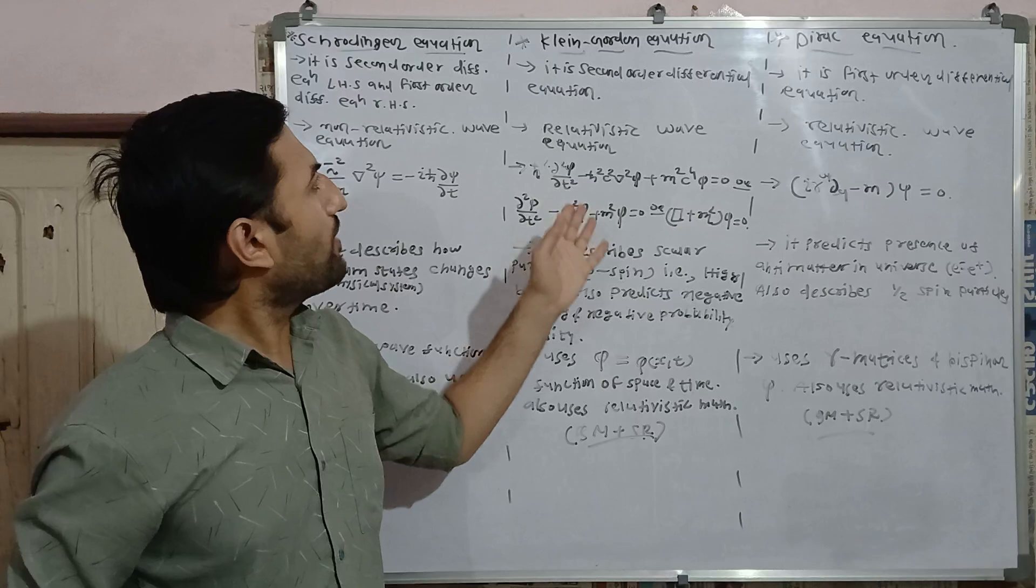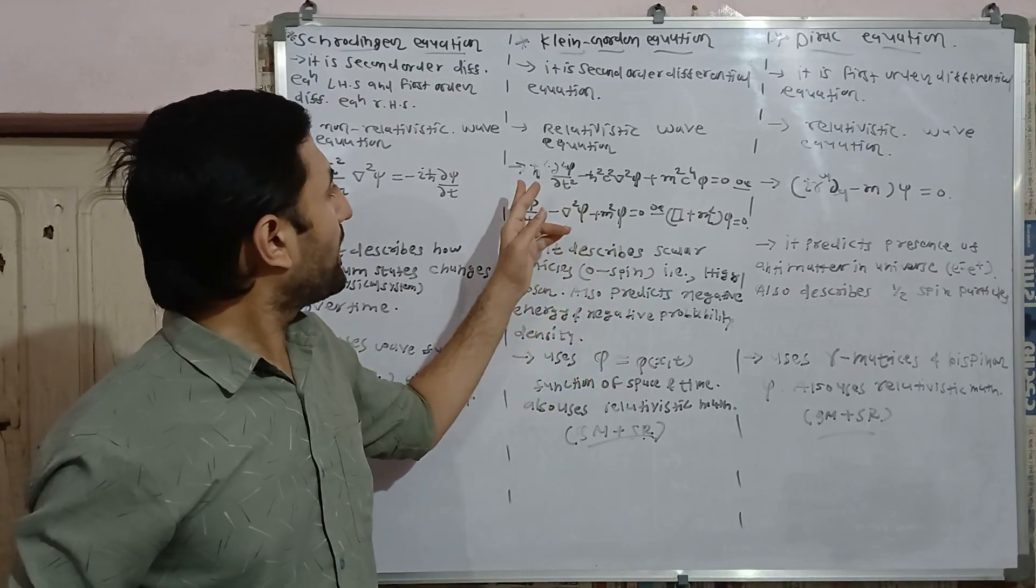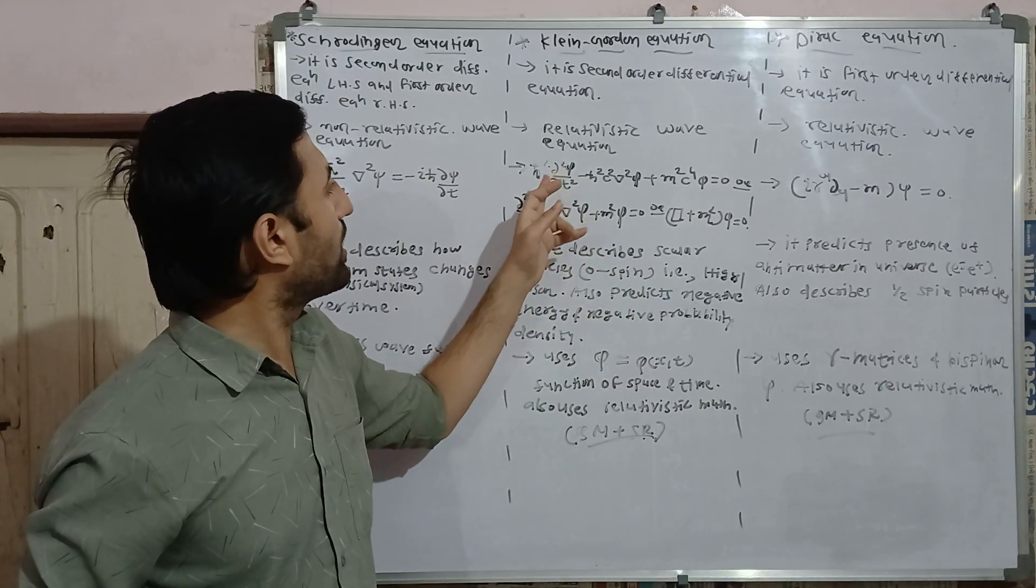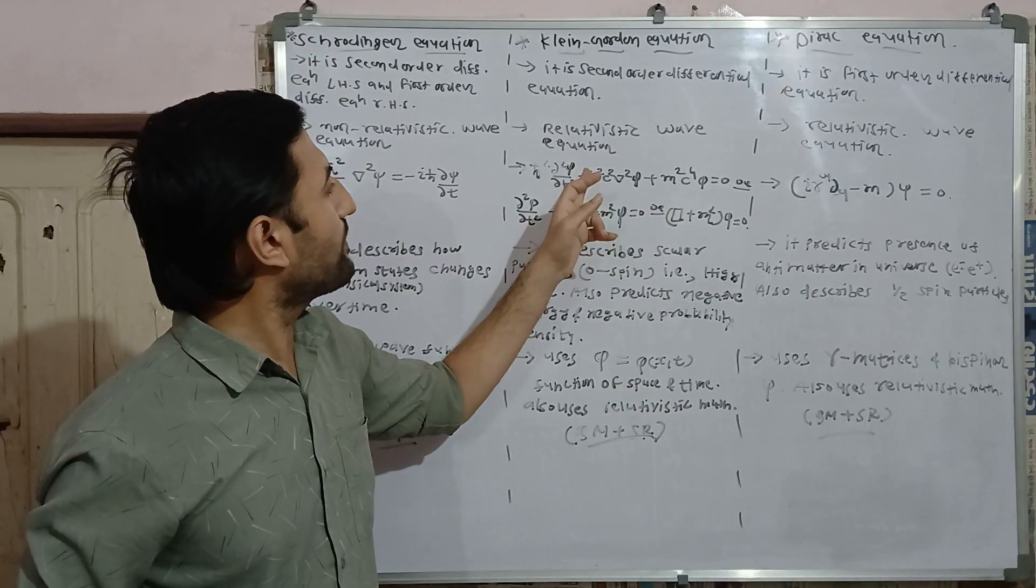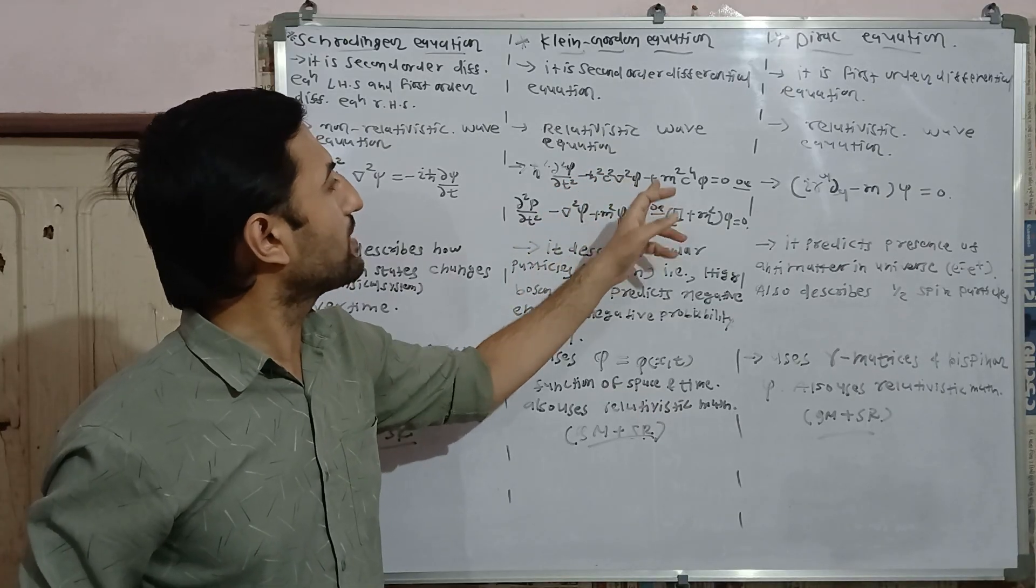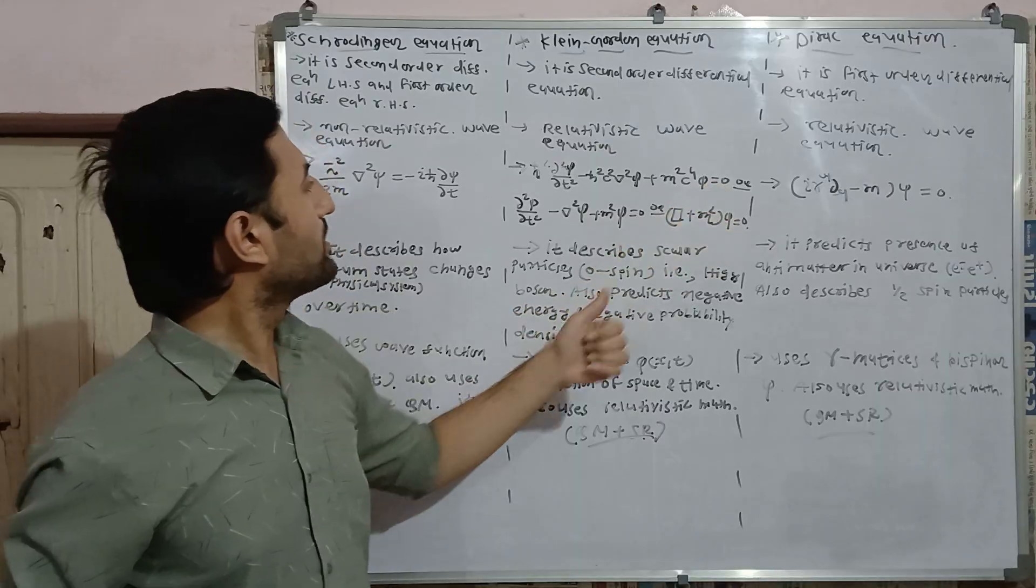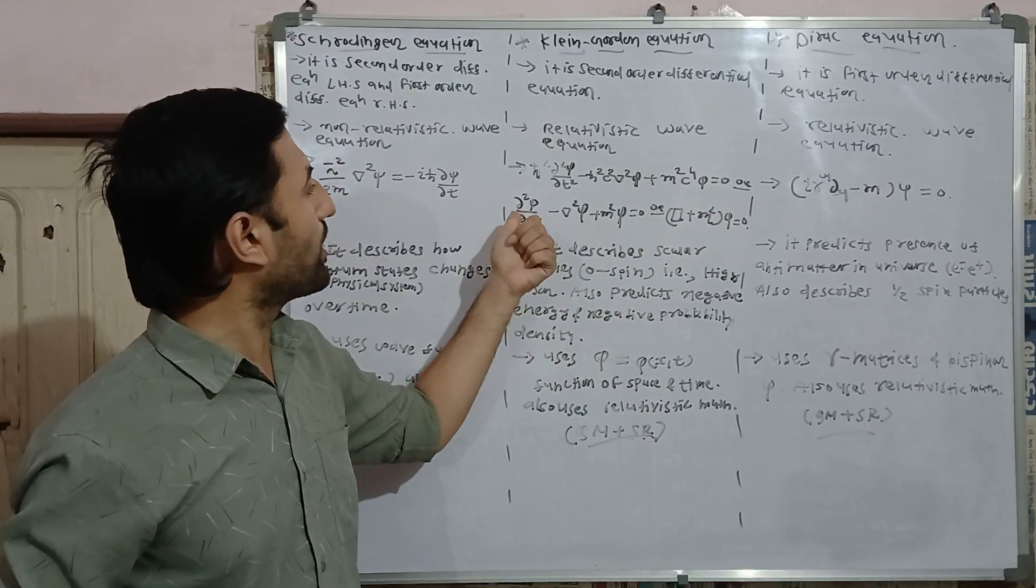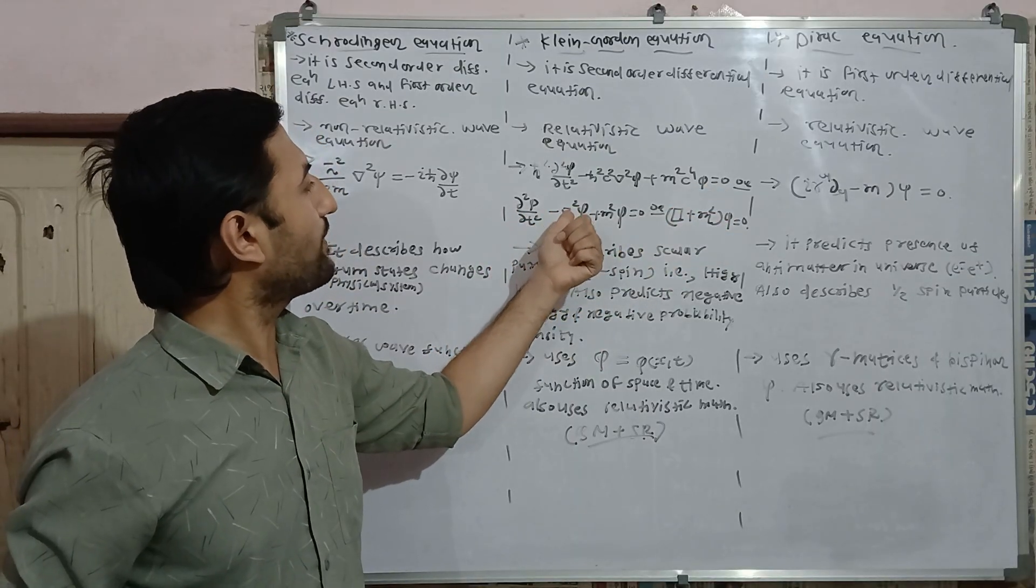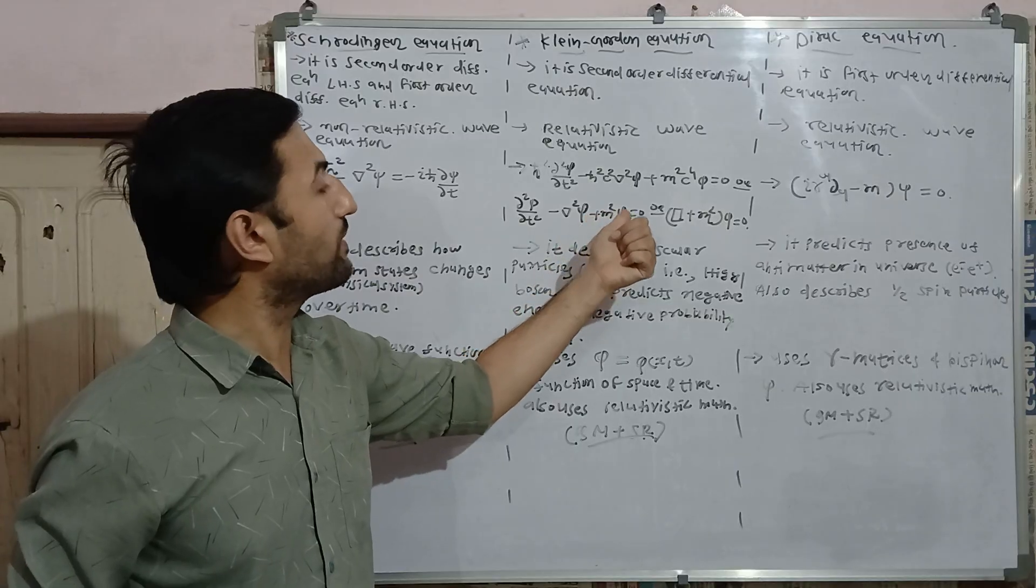There are three forms of Klein-Gordon equation. First is h-bar squared del squared phi over del t squared minus h-bar squared c squared del squared phi plus m squared c to the fourth phi equals zero. Second form is del squared phi over del t squared minus del squared phi plus m squared phi equals zero.